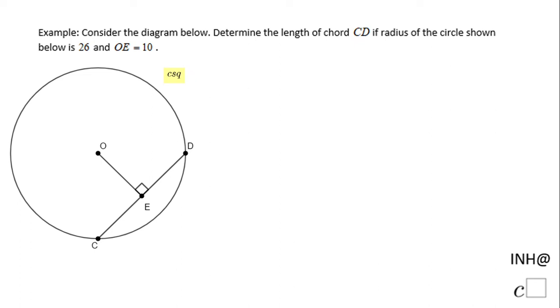Welcome to I Need Help at C Squared. In this example we have a circle and we need to find the length of chord CD if the radius of the circle is 26 and OE is 10.